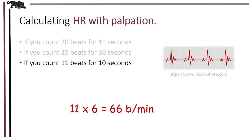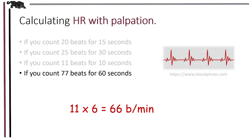If you counted 77 beats for a full 60 seconds — which is one minute — you don't need to do anything. The count is already in beats per minute.